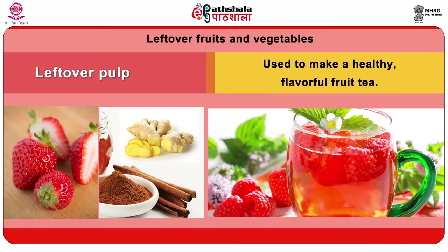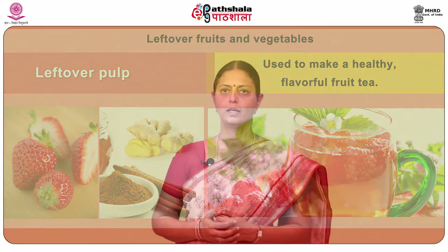What could be done with leftover fruits and vegetables? Leftover pulp after the preparation of fresh juices can be combined with water, cinnamon and ginger, simmered and strained to make a healthy, flavorful fruit tea. Leftover pulp of fruit juices and vegetables can be added in baking of muffins, cakes and cookies for added texture and flavor.